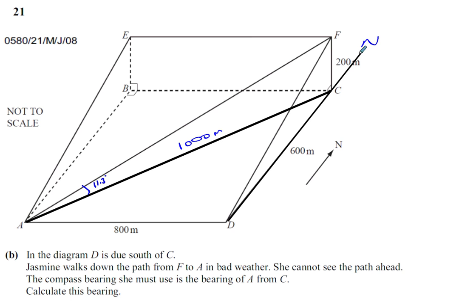We have to move clockwise and go all the way around until we're facing towards A. This is the angle that we're trying to find. This is the bearing of A from C.